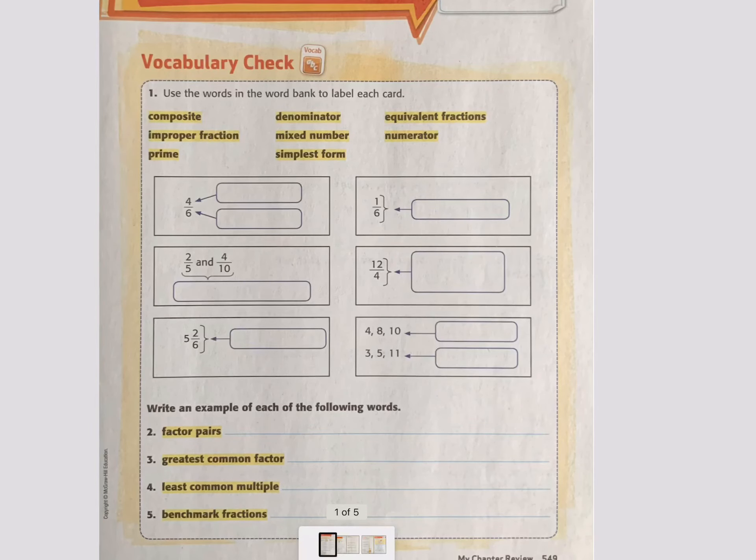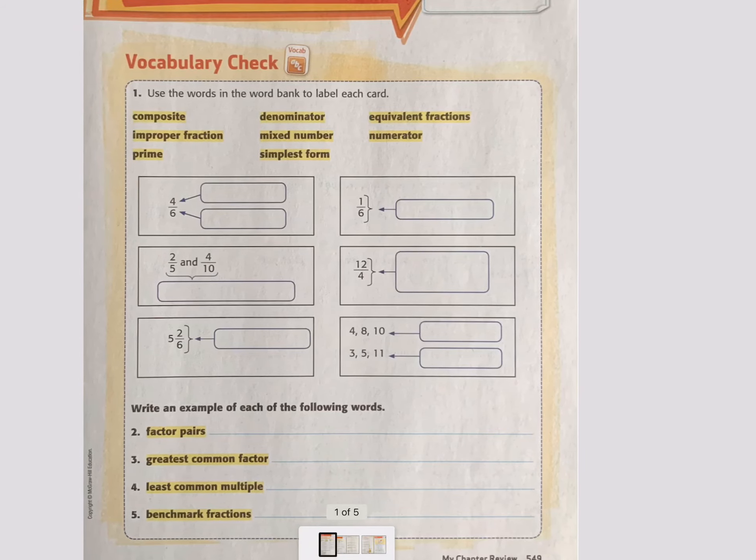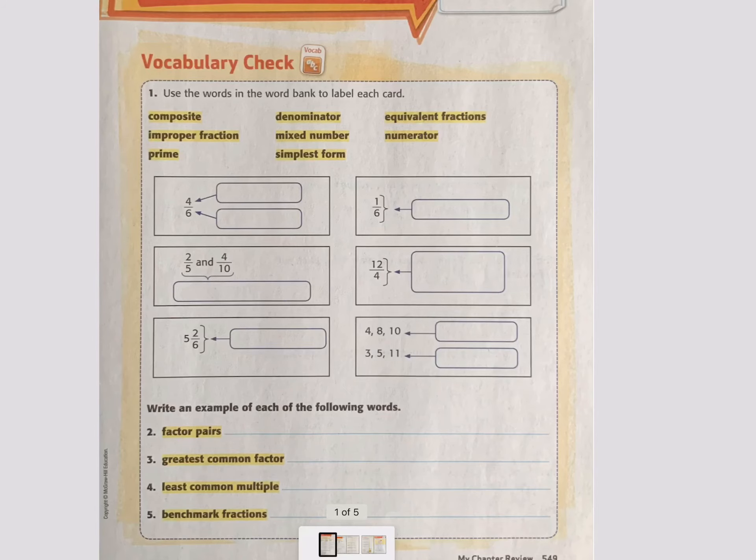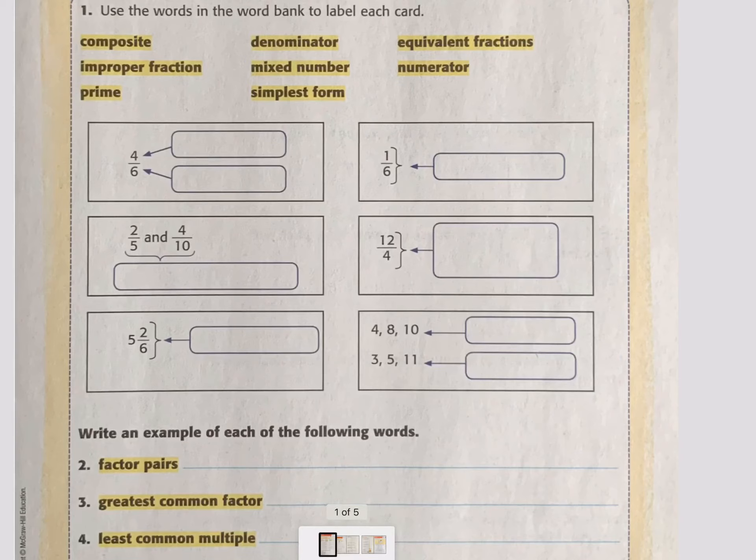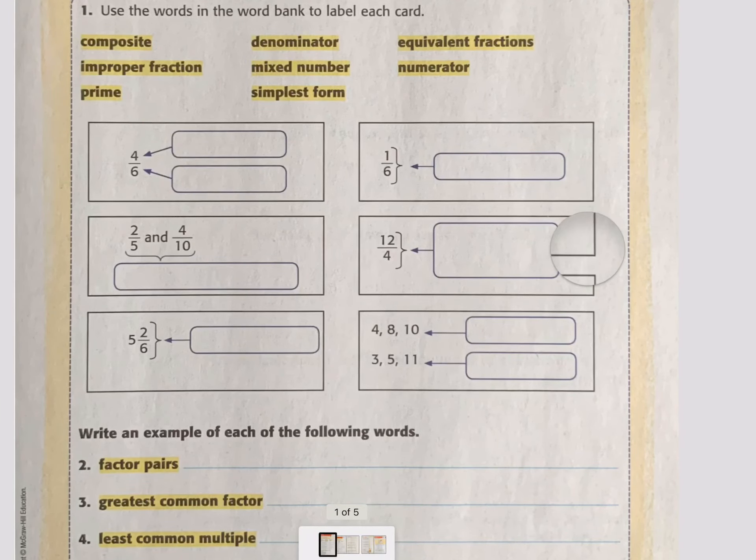All right. Hey, guys. Let's grade our Chapter 8 math review together. Okay, let's go over these vocab words. I'm going to link composite and prime together. Talk about those. I'm trying to get my pen working. Here we go.